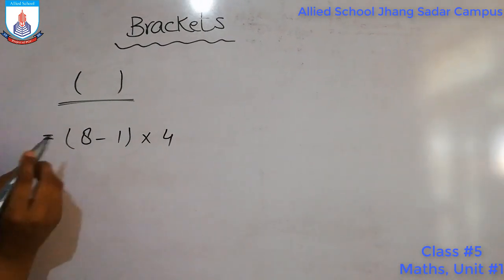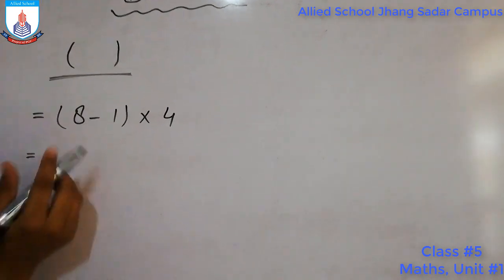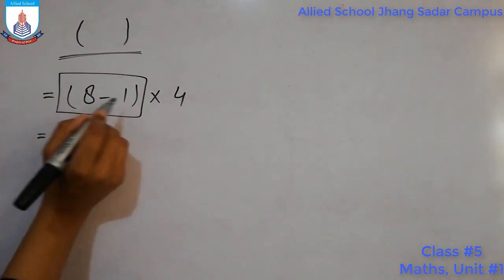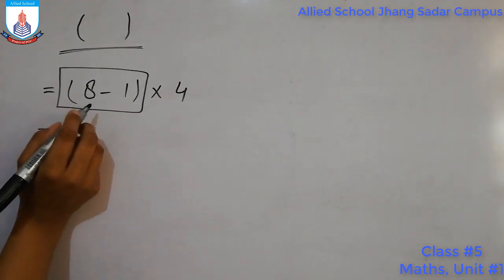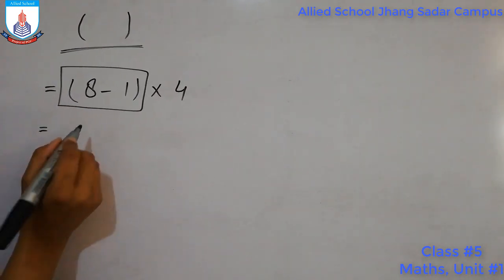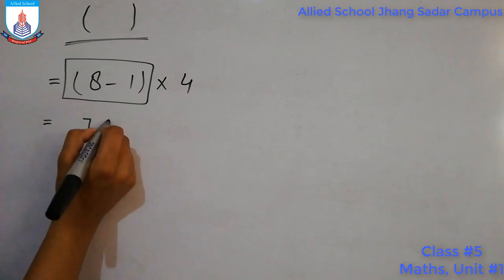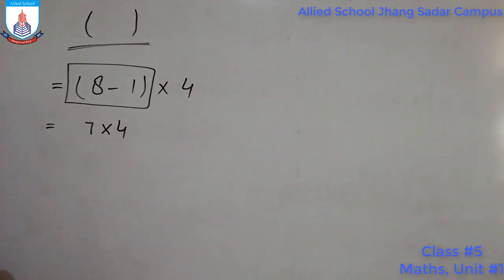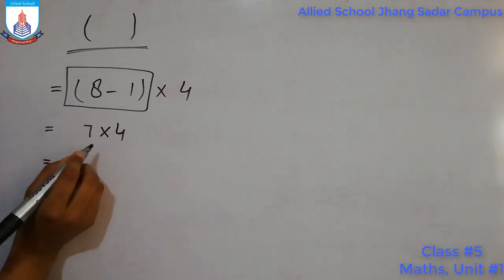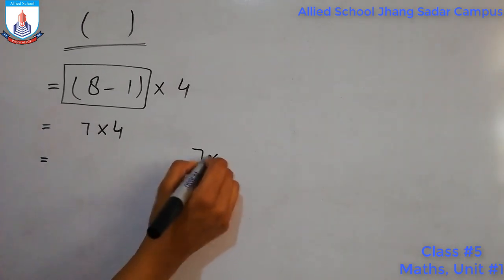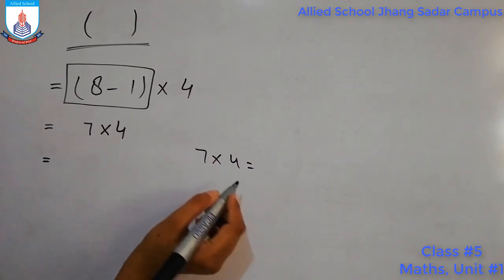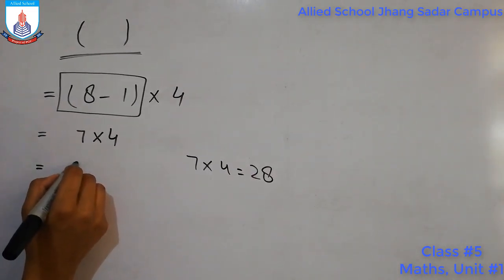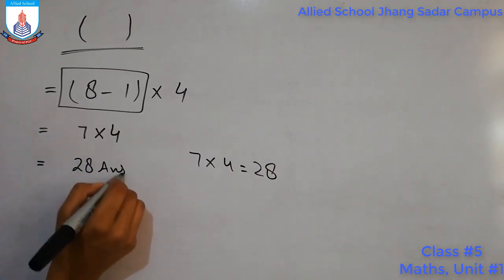When we see brackets, we need to solve the bracket first. For example, the bracket contains 8 − 1, so we solve 8 − 1 first. 8 − 1 equals 7, and then 4 is multiplied by this result. So 7 × 4 — remember the table — gives us 28. So 28 is our answer.